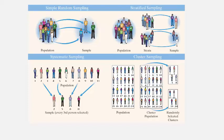For systematic sampling, you have the population lined up and select every kth person — in this case every third person. So you'd pick the second, the fifth, the eighth, the eleventh, and so on.